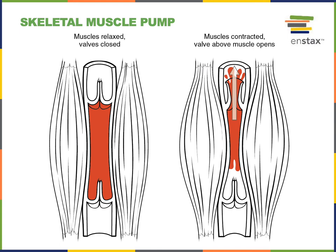The valves inside veins enable a skeletal muscle pumping function, where as a skeletal muscle contracts it squeezes on the blood in a vein deep to that muscle, increasing pressure in a compartment between two valves. This increased pressure forces blood back toward the heart through the valve. Because the valve prevents blood from flowing backwards, in the leg blood is forced upward toward the heart.